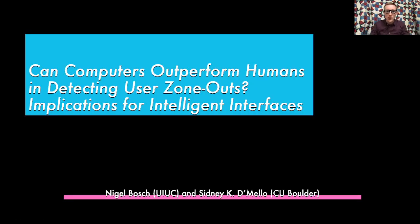Hi, everyone. I'm Nigel Bosch, and today I'll be talking about our paper from Transactions on Computer-Human Interaction called 'Can Computers Outperform Humans in Detecting Users' Zoneouts? Implications for Intelligent Interfaces.'